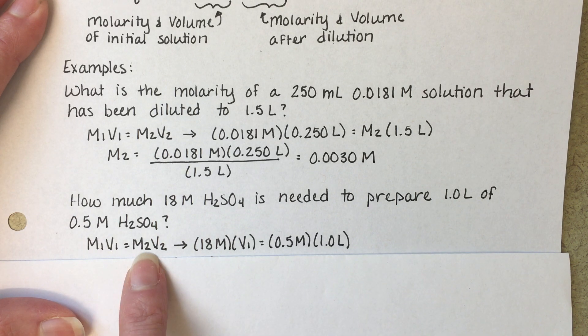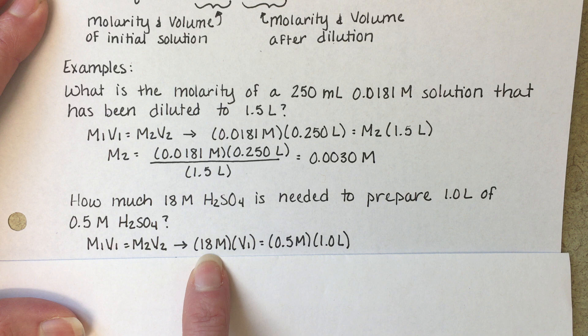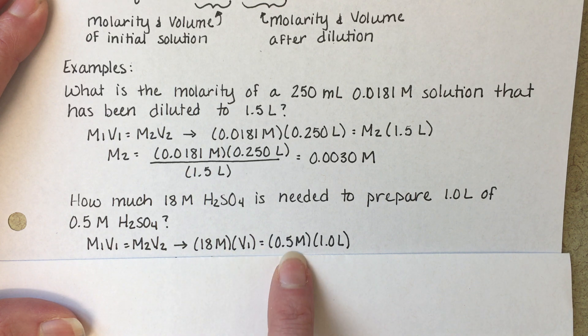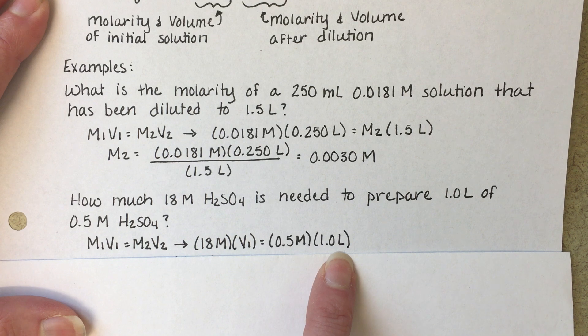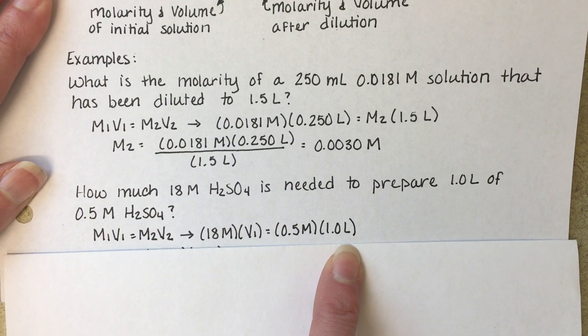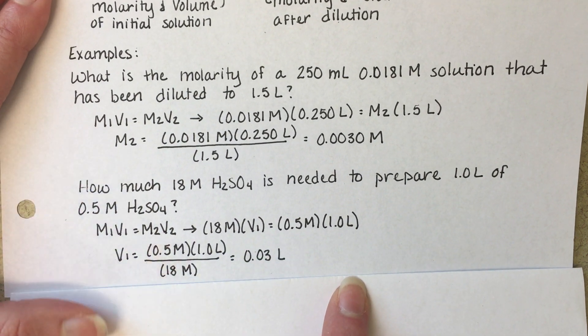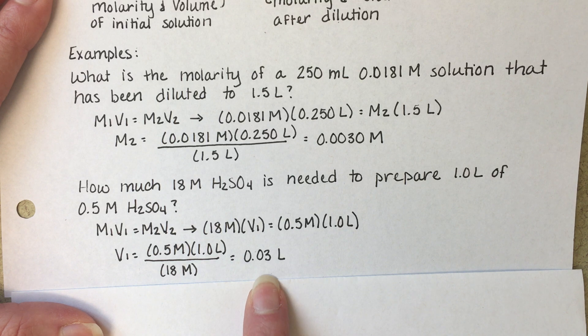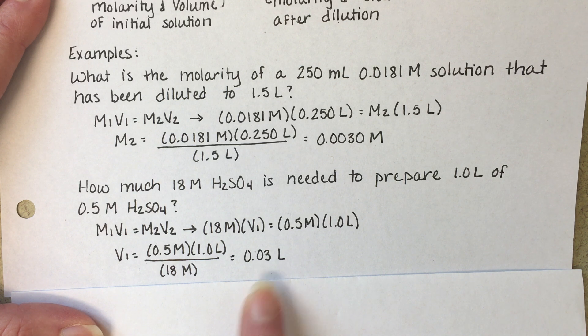Again, M1V1 equals M2V2. Our initial molarity, our initial volume is our unknown, our final molarity, our final volume. Rearrange and solve for V1 tells us that we need 0.03 liters to make one liter of the 0.5 molar solution.